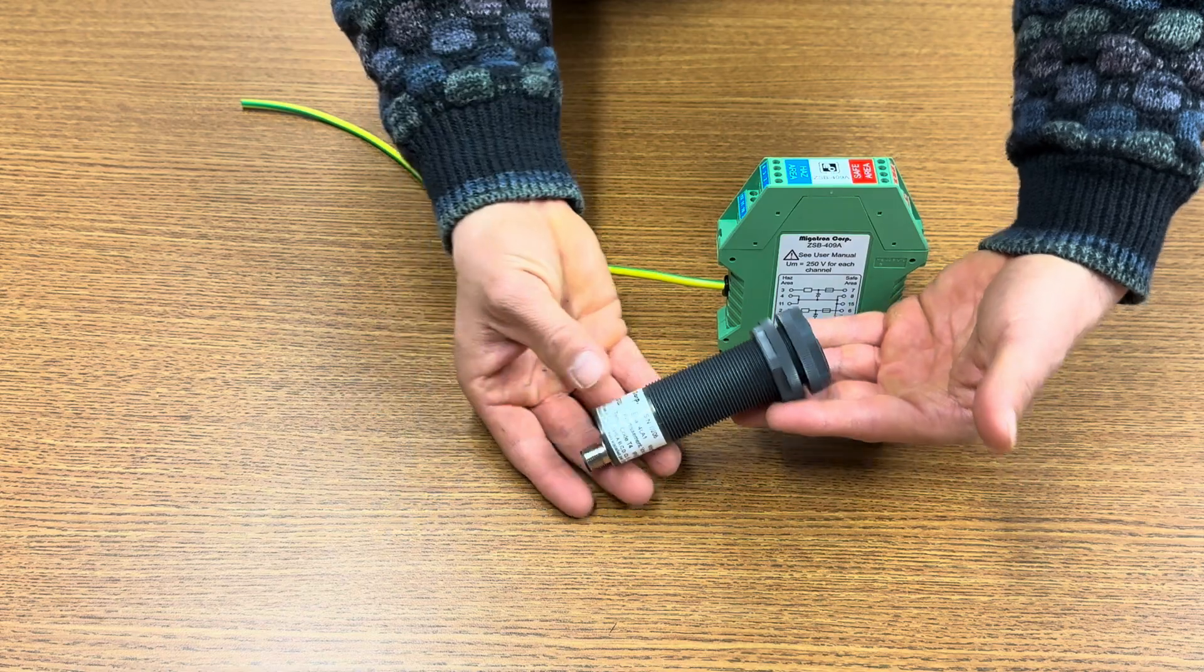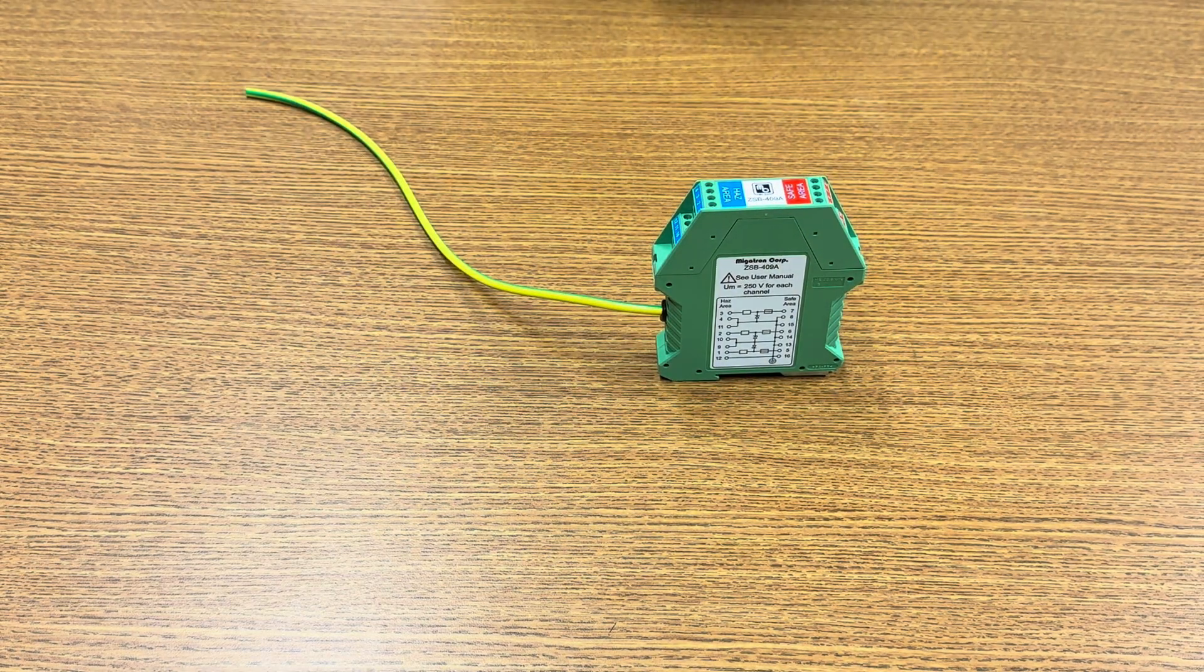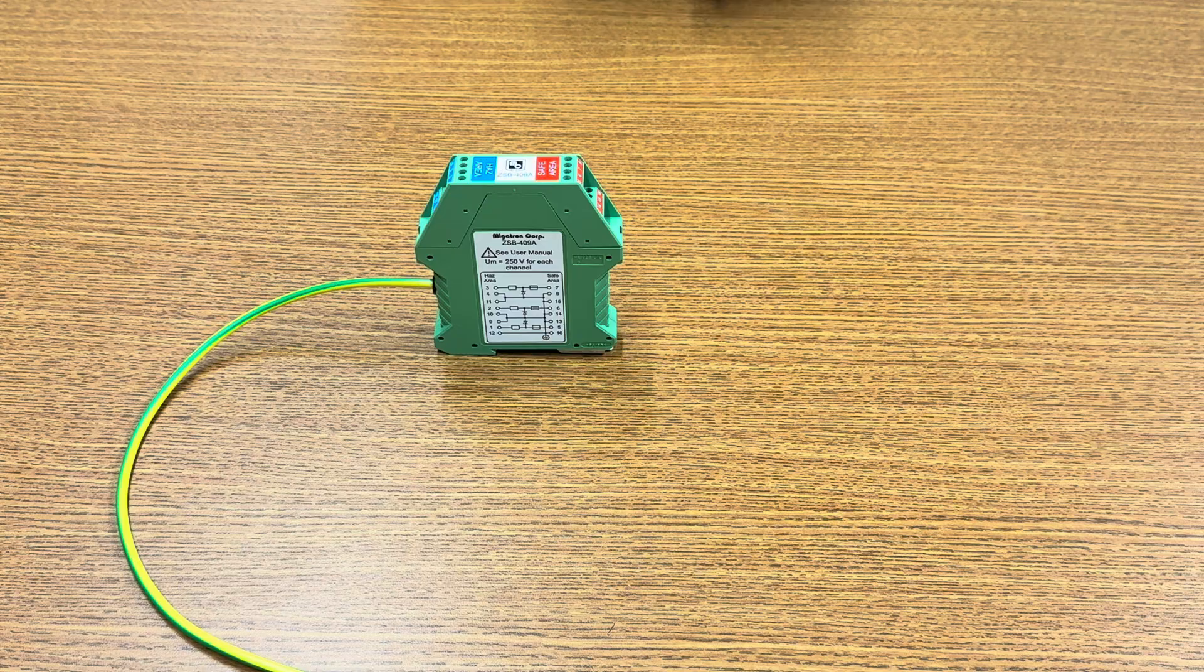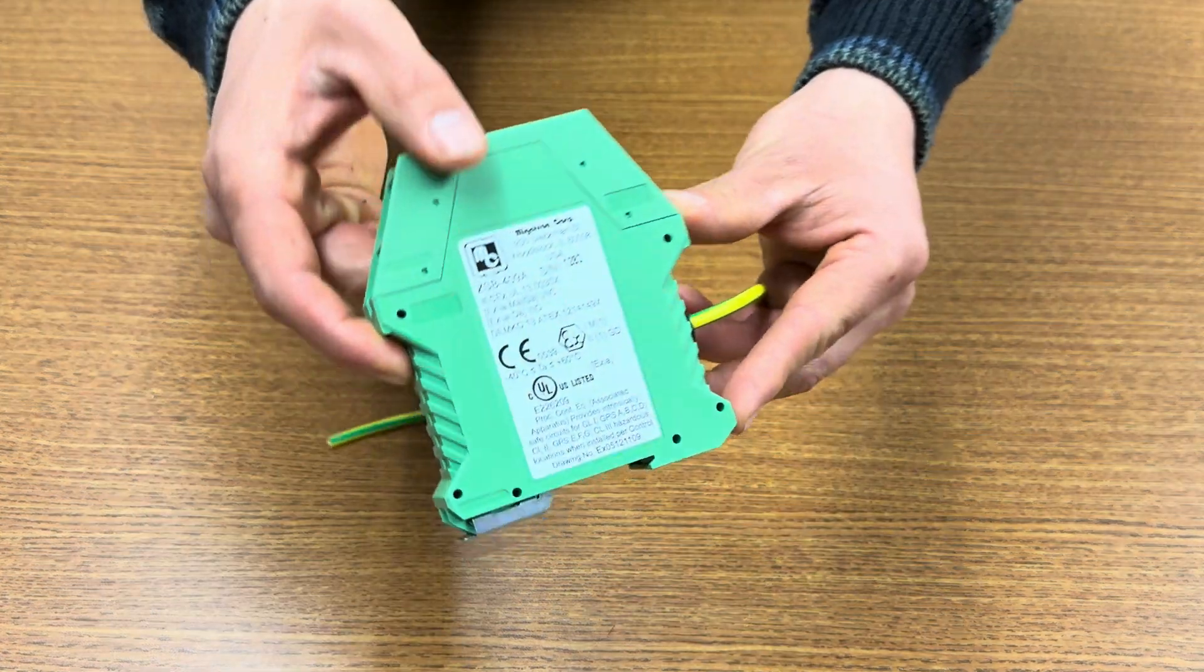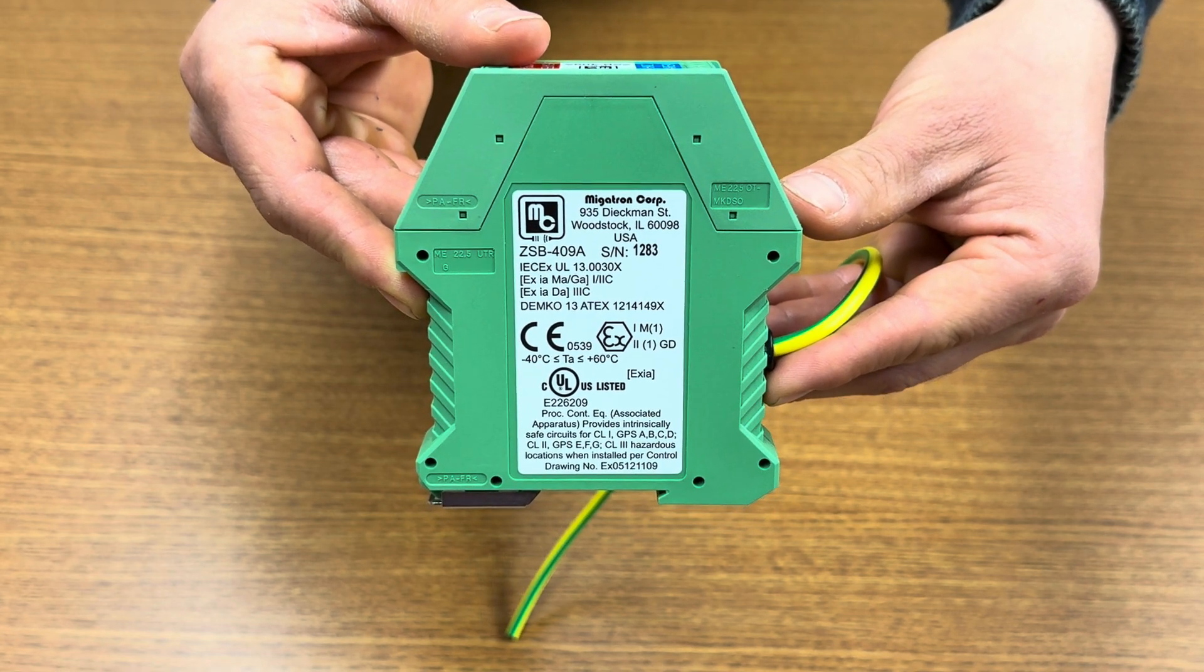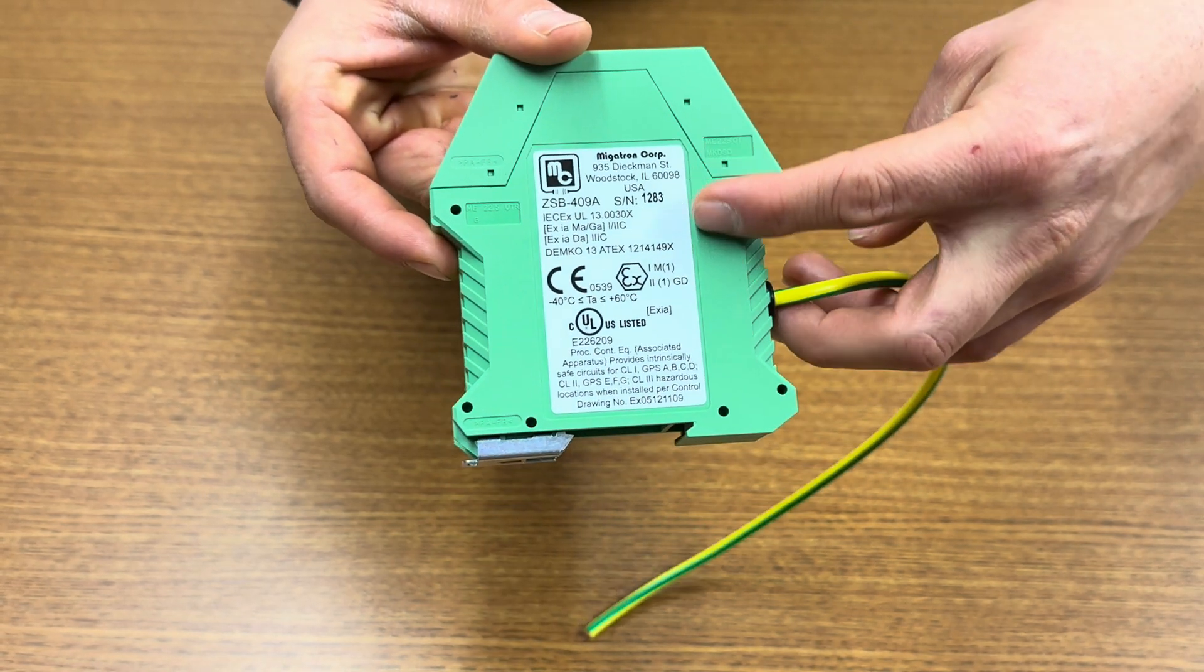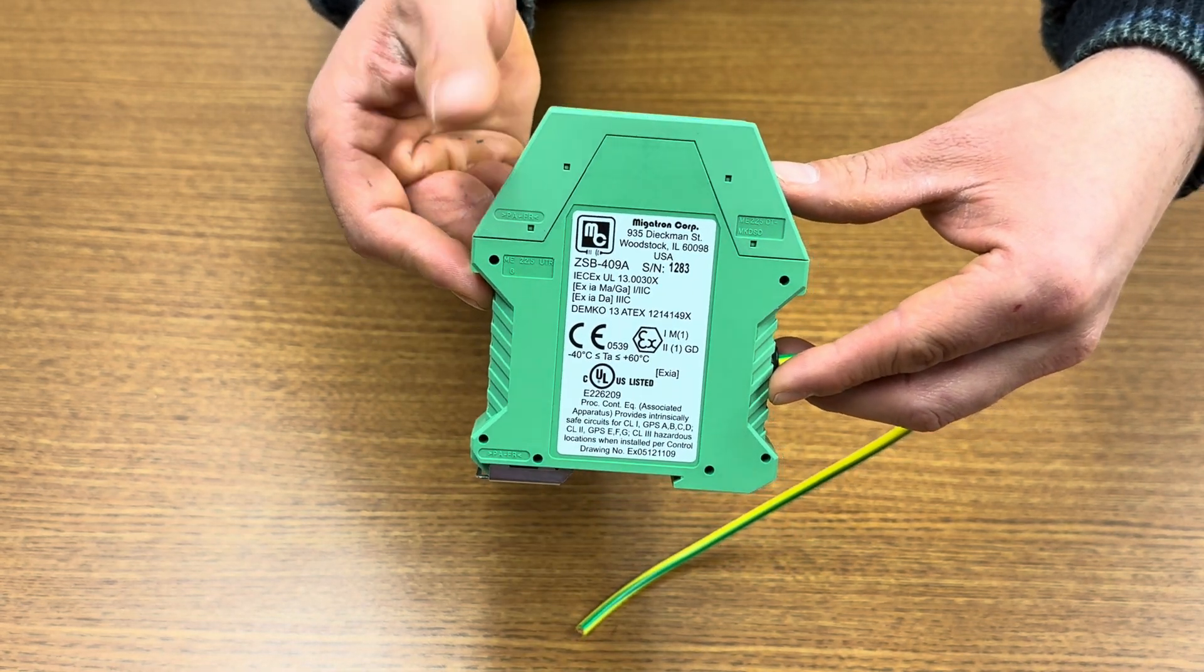It combines all of the connections into one convenient package. The barrier provides for the safe operation of intrinsically safe electrical apparatus installed in a hazardous gas or dust environment classified as Zone 0, 1, 2, 20, 21, or 22 for ATEX, IECEx, and Class 1, 2, or 3 for UL, CSA.